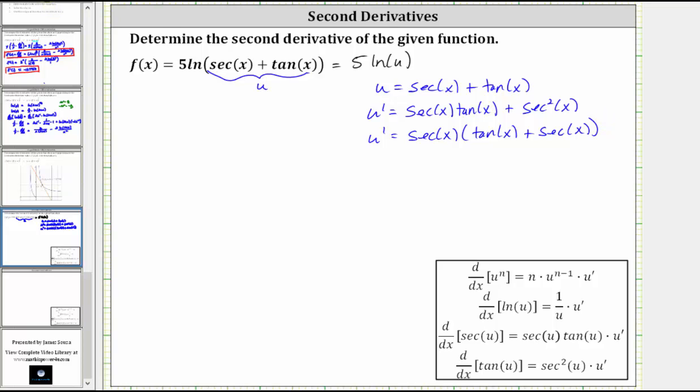And now let's find the first derivative, where the first derivative is equal to the derivative of five natural log u with respect to x, which is equal to five times one over u times u prime, which in terms of x, we have f prime of x is equal to five times one divided by u, which is secant x plus tangent x. Then we have times u prime.